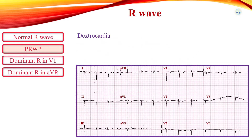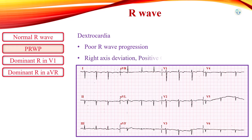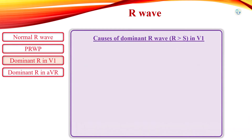In dextrocardia, R-wave progression is characteristically absent, and right axis deviation with a positive QRS complex in AVR can be observed. Normally, the R-wave is much smaller than the S-wave in V1 and V2. If the R-wave is larger than the S-wave in V1, the R-wave should be less than 5 mm; otherwise, the R-wave is abnormally large.